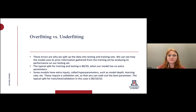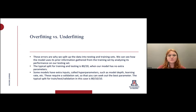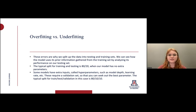Some models have extra inputs called hyperparameters, such as model depth and learning rate. These are commonly used in neural networks that can get really complicated with different parameters. In this case, you have a validation set so you can seek out your best parameter before exposing your model to the testing set. If the model has seen your testing set, it can get biased because it already knows what its outcome should be. You need that extra set to tune parameters before you have your finalized model — in that case you would split it 80-10-10.